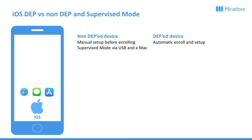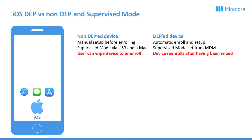If it's not DEP, supervised mode can only be set via USB cord and a Mac, whereas if it's DEP, you can set supervised mode from an MDM. If it's not DEP, the user can wipe the device to completely remove the management and unenroll it, whereas if it's DEP, the device will re-enroll itself after having been wiped. Check out our other video on that.